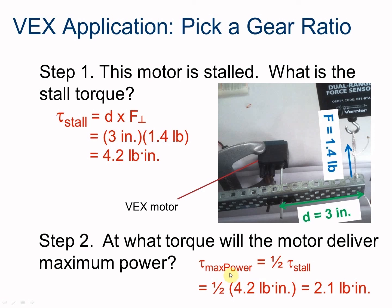Then the question, of course, is what will the motor deliver at its maximum power? What will that torque be? It's half of the stall torque, as we discovered in the previous slides. So we take our maximum torque, divide it in half, and we get 2.1 pound inches. This is the amount of torque that we want to supply and get maximum power out of our motors.